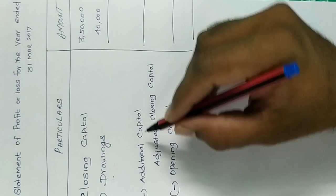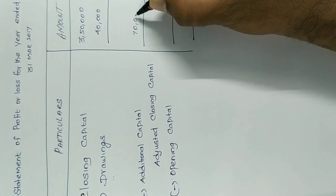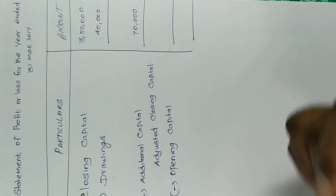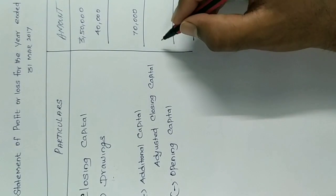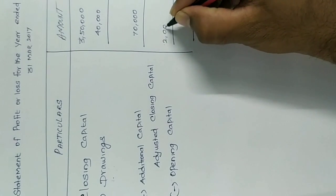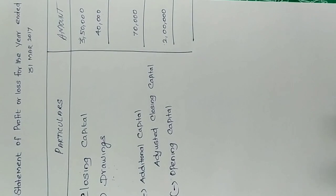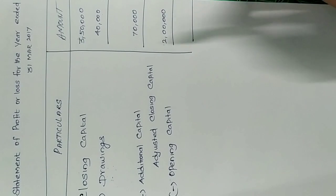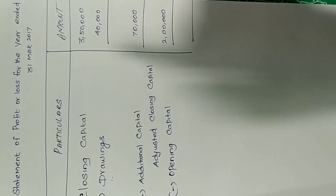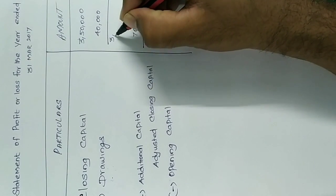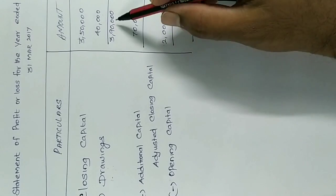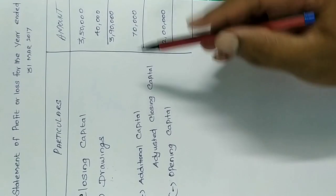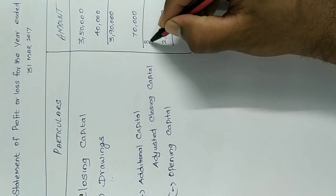Additional capital is 70,000. So: closing capital 3,50,000 plus drawings 40,000 equals 3,90,000. Then minus additional capital 70,000 equals adjusted closing capital of 3,20,000.